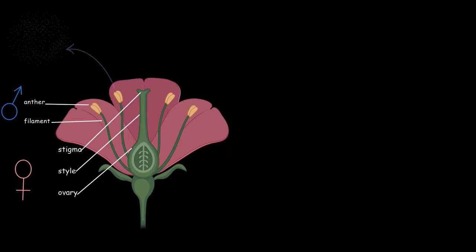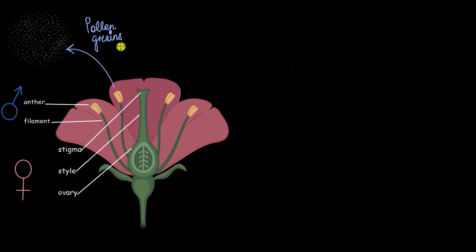So it begins with the release of pollen from the anthers. The small particles that you see here are pollen grains. Next, these pollen grains fall onto the female part of the flower. It can happen through wind. It can happen through other pollinating agents like bees or other insects. So here, let me be that pollinating agent. I will carry the pollen all the way to the female reproductive part here.